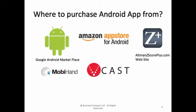Where to purchase the Android app from? The Android app is available on Google Android Marketplace, Amazon App Store for Android, Altman G-Score Plus website, Mobihand, and from Verizon Android App Store.